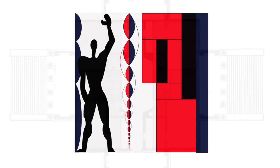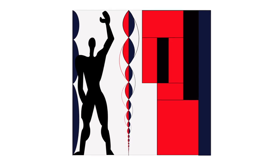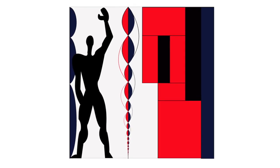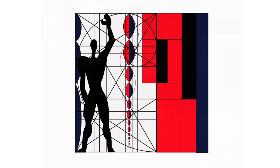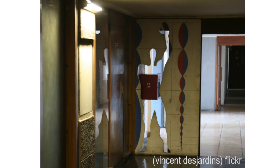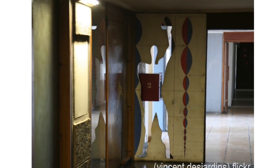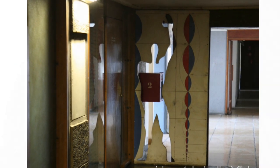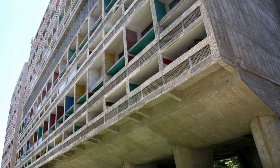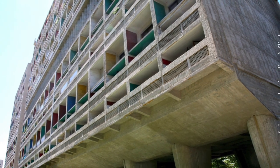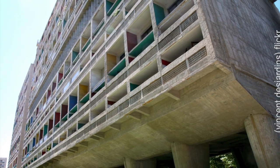Even the modern architect Le Corbusier used the proportions in his Modulor Man study, and most likely in the design of his Unité d'Habitation in Marseille, France.